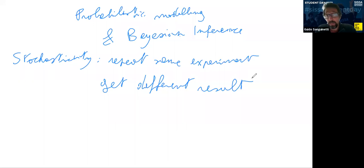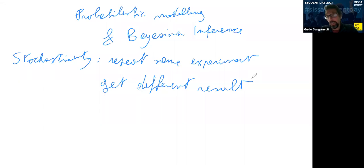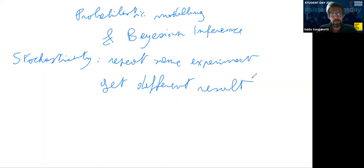This might be because of extreme sensitivity to initial conditions, like in a chaotic dynamical system, or because there is intrinsic stochasticity — say quantum mechanics, but also in systems of chemical kinetics with very low molecule numbers. The strategy, if you don't get the same result every time, is to try to model the variability instead of modeling only the outcome directly.